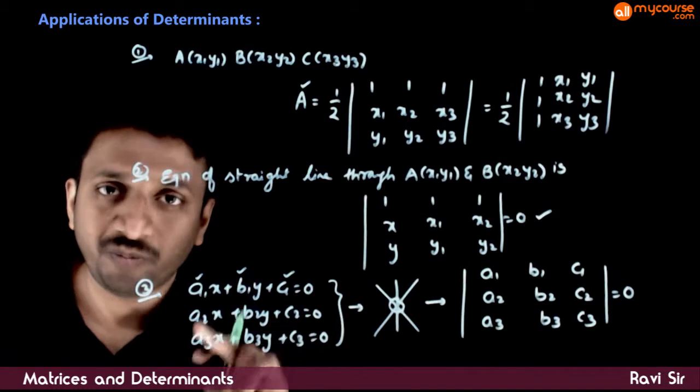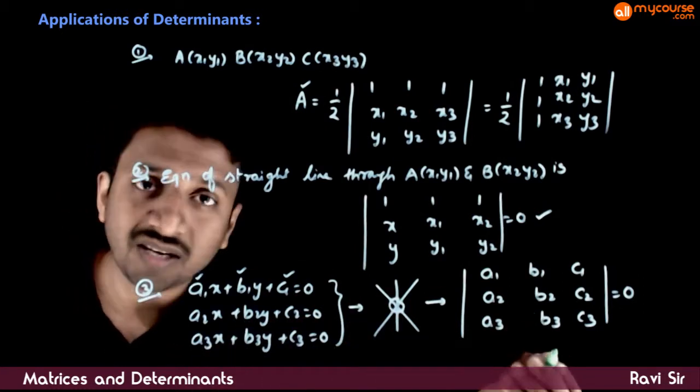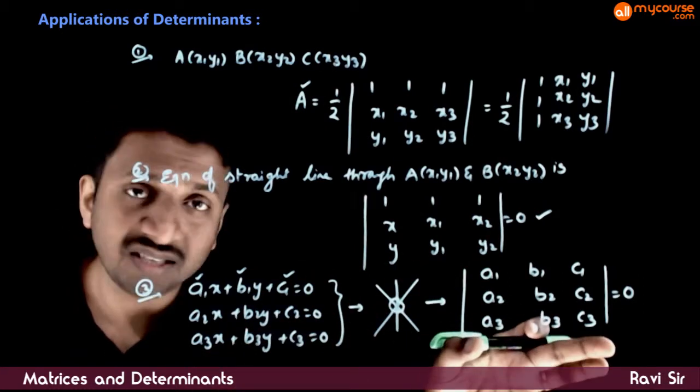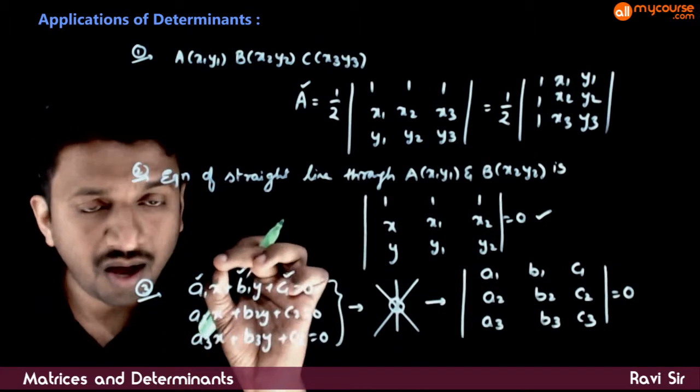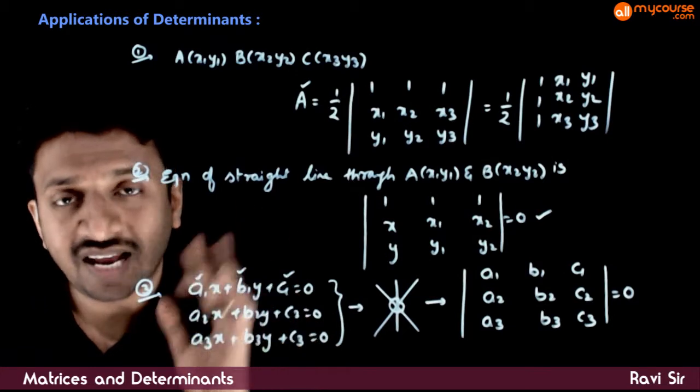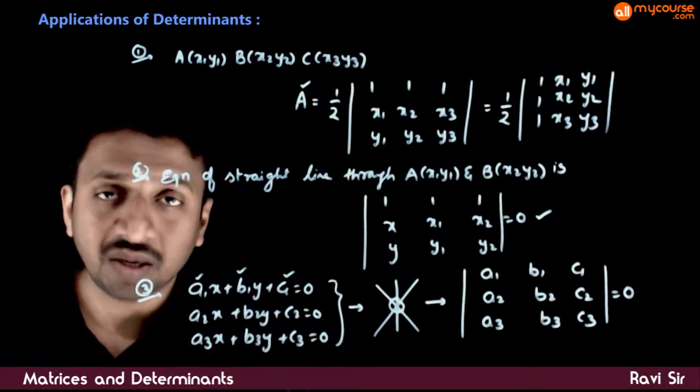The reverse need not be true - keep this in mind. If this determinant equals 0, the lines may be concurrent, or any of these lines might be coinciding with each other.